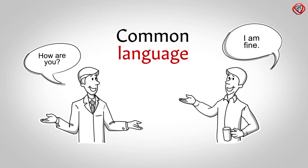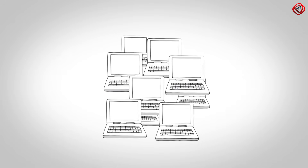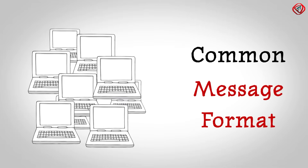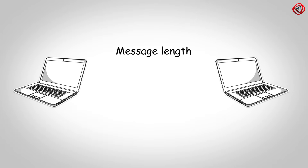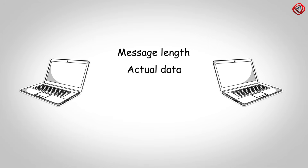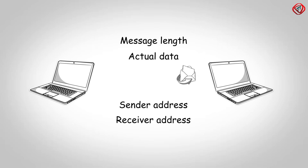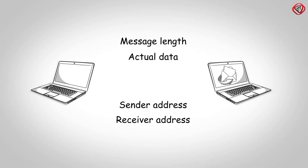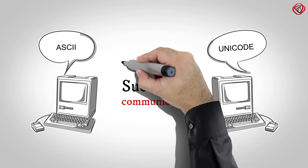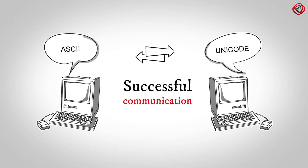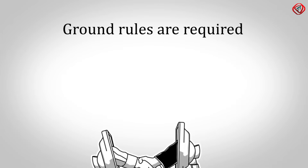Both ends should be able to understand what the other person is saying. Similarly in computer networks, the computers should be sharing a common message format. They should know how long the message is, which part of the message is the actual data, which part is the sender's and receiver's address. Such information will result in successful communication between computers. If one computer speaks ASCII and the other speaks Unicode, successful communication will not occur unless they are prepared to perform translations back and forth. So some ground rules are required to communicate successfully.